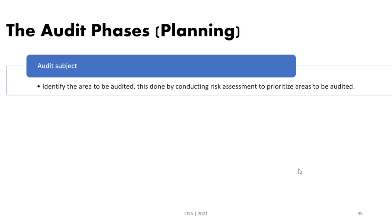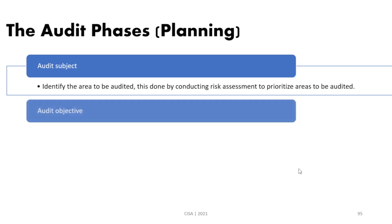Audit based on risk will help us to identify what are the major areas of concern and what are the system priorities that we need to include in our auditing scope. The main reason for doing our audit based on risk assessment is that we have limited resources — we cannot audit everything. By doing risk assessment we can prioritize what are the significant areas to include in our auditing mission.